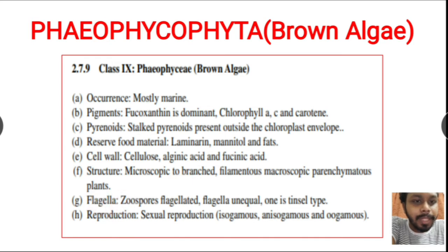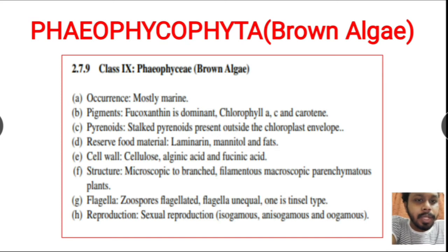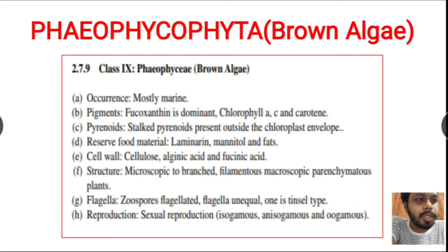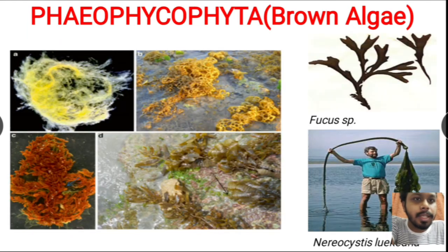Brown algae have flagella that are mostly heterokont — unequal, with one tinsel type. Sexual reproduction is isogamous, anisogamous, and oogamous types. These structural and flagellar details have been discussed in other videos.